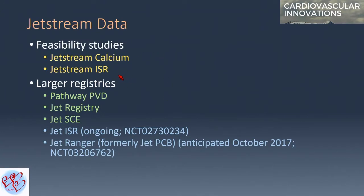We now have quite a bit of data generated with the JetStream. Feasibility studies include the JetStream Calcium and the JetStream ISR. Larger registries include the Pathway PVT, the JET Registry, and the JetSCE. Ongoing studies are the JetISR and the JetRanger, which will be starting very soon.